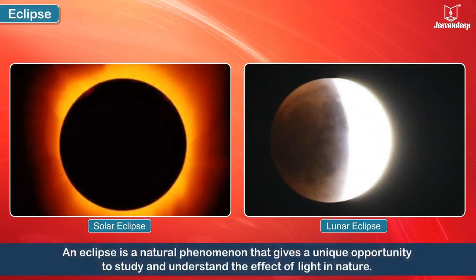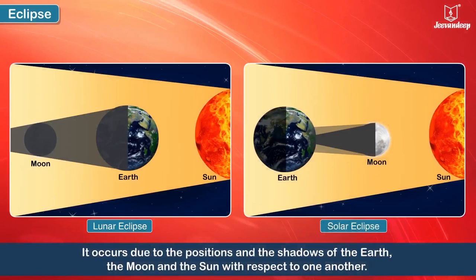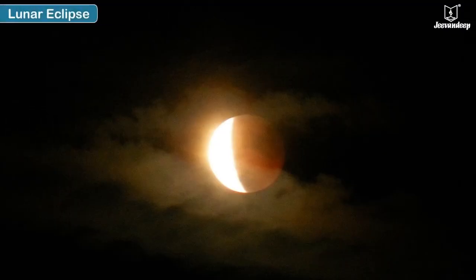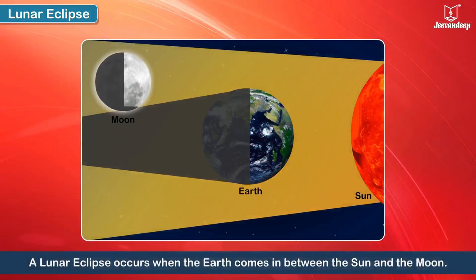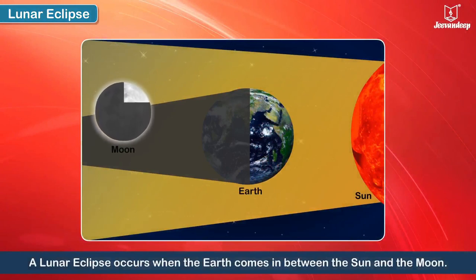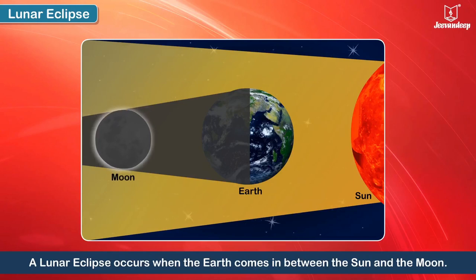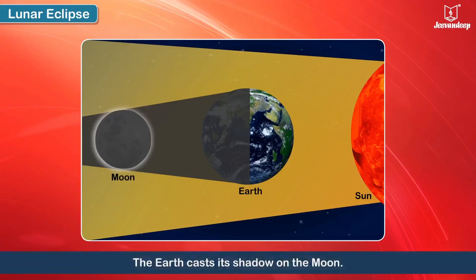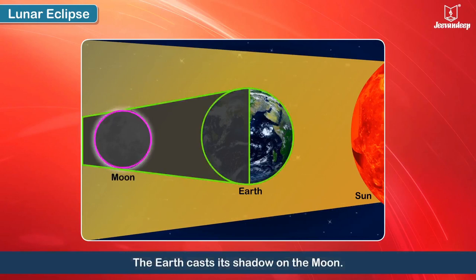Eclipse. An eclipse is a natural phenomenon that gives a unique opportunity to study and understand the effect of light in nature. It occurs due to the positions and the shadows of the Earth, the Moon and the Sun with respect to one another. A lunar eclipse occurs when the Earth comes in between the Sun and the Moon. During a lunar eclipse, the Earth casts its shadow on the Moon.